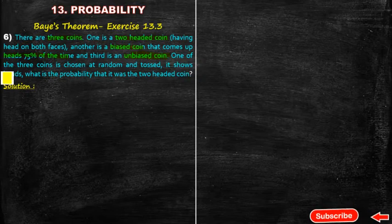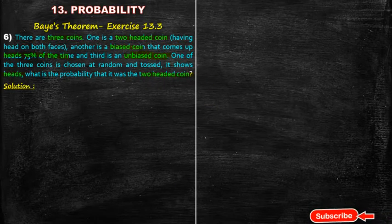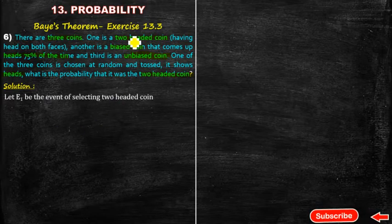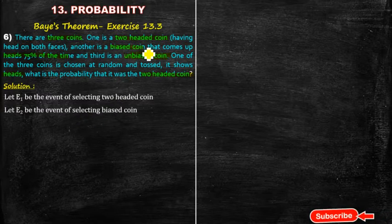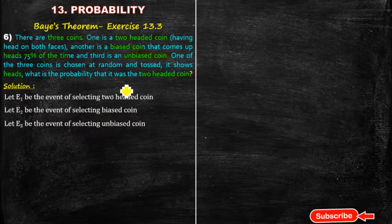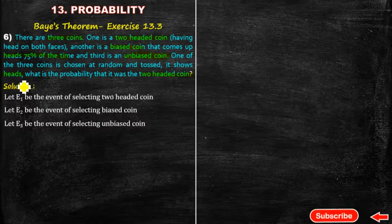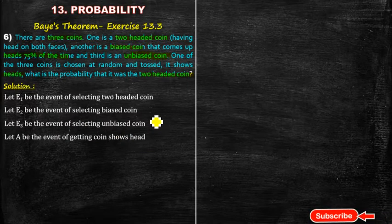It shows a head. The probability that the two-headed coin is selected — here, as usual, let E1 be the event of selecting the two-headed coin, E2 be the event of selecting the biased coin, E3 be the event of selecting the unbiased coin. Let A be the event of getting a head when the coin is tossed.